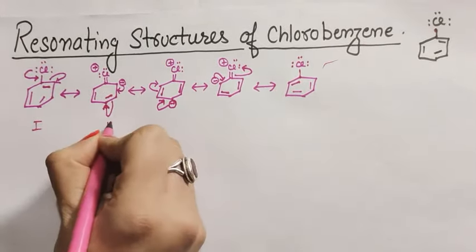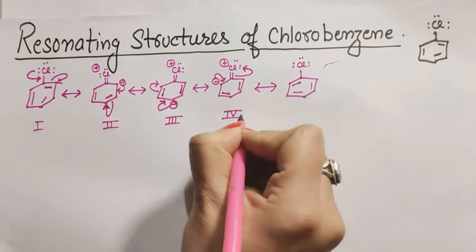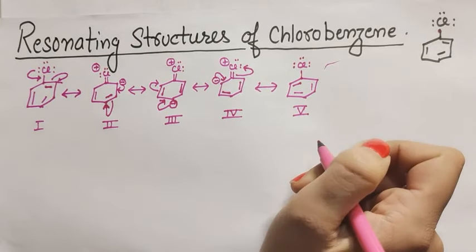Now, this is the first, second, third, fourth, and five resonating structures of chlorobenzene. Thank you so much. Do like and subscribe.